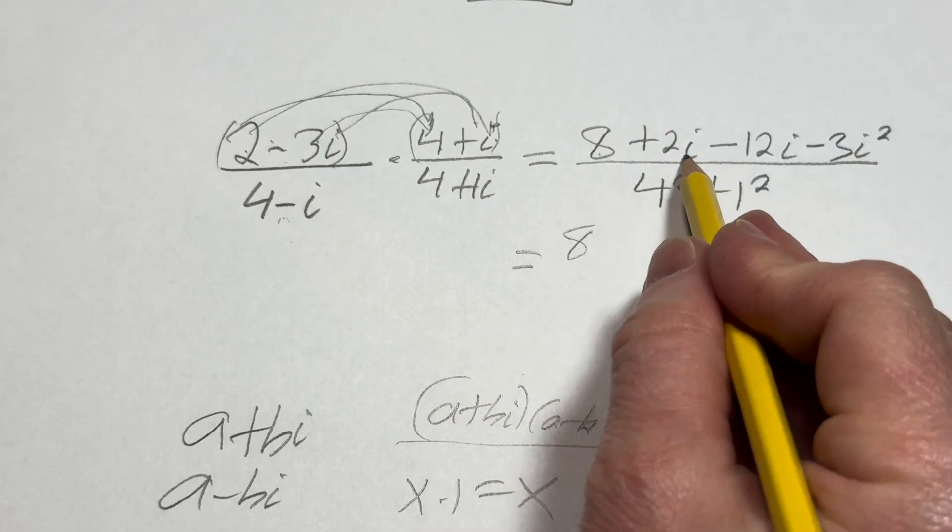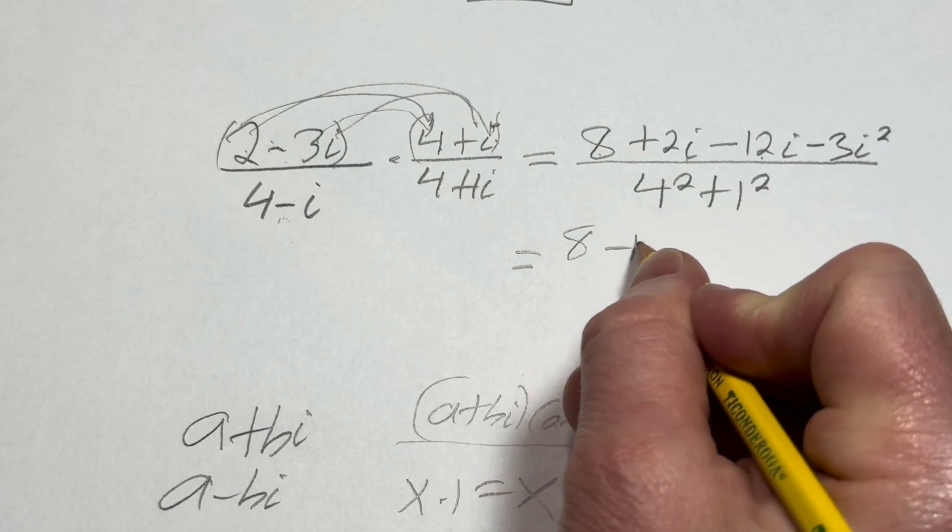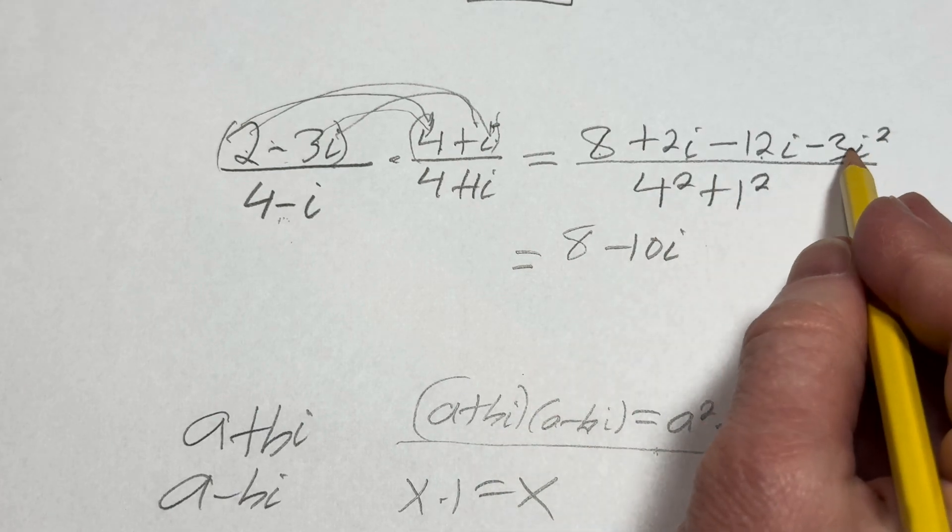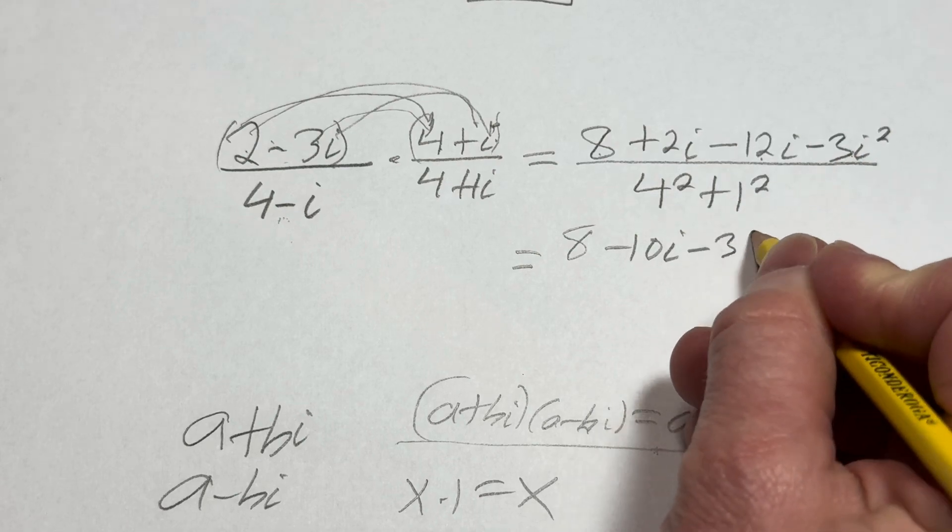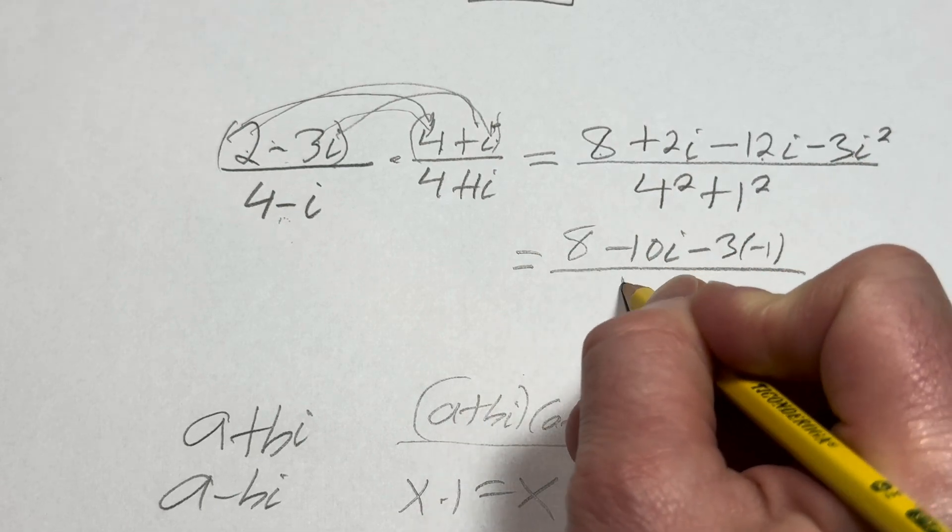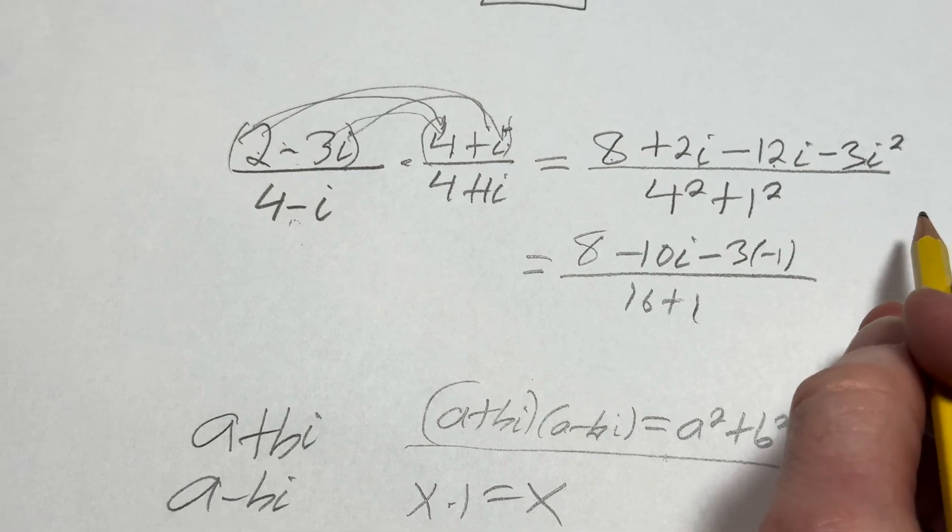So this is equal to... So it's 8. 2i minus 12i is minus 10i. And then i squared is negative 1. So this will be minus 3 times negative 1 over 16 plus 1. Let's keep going.